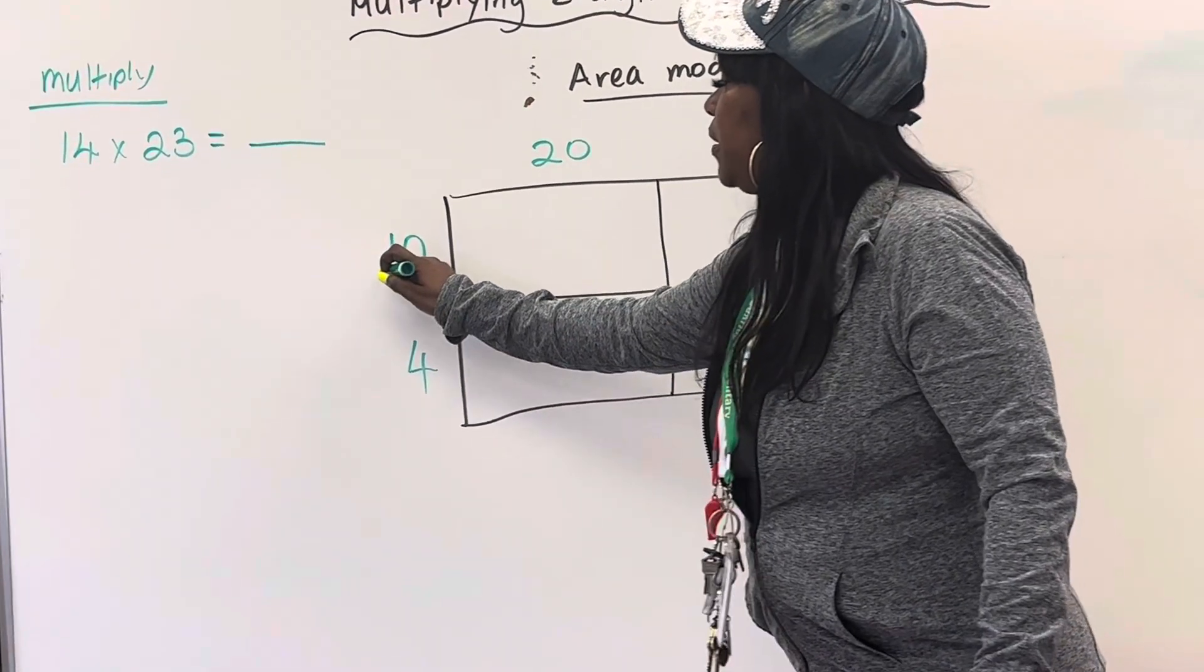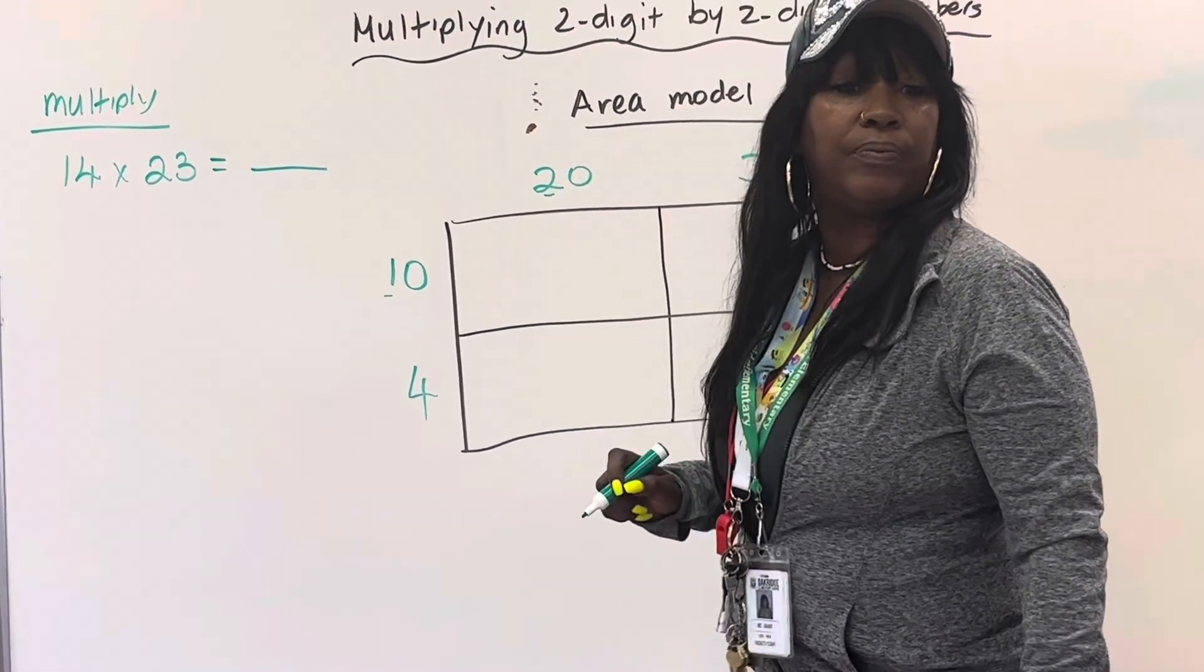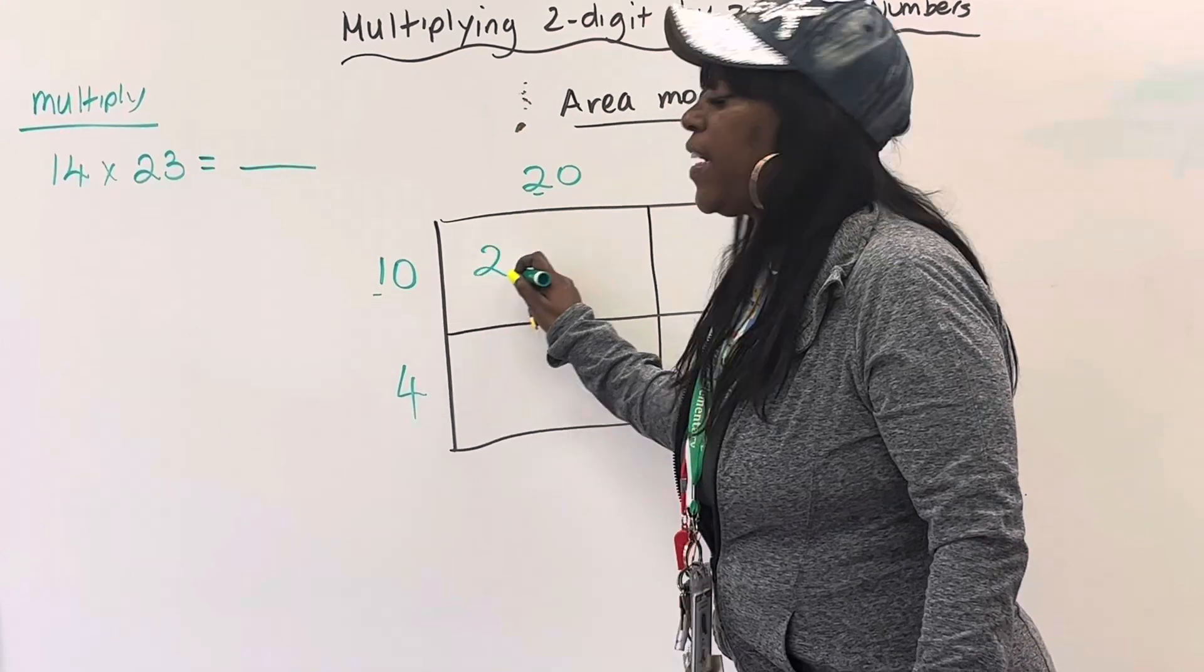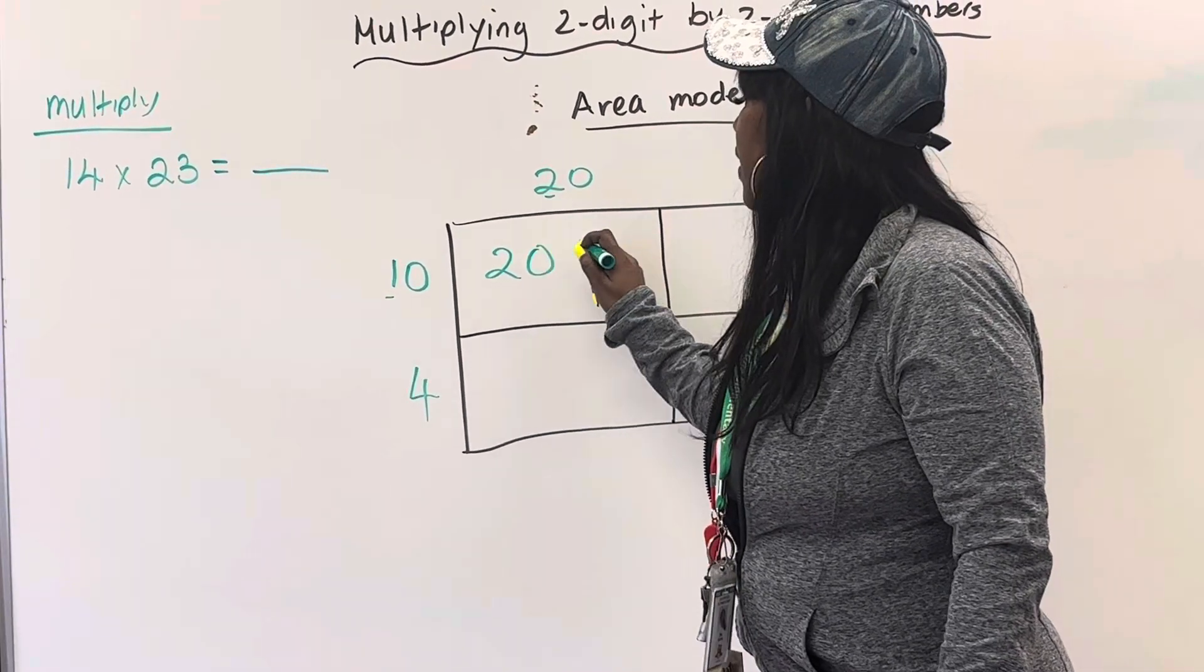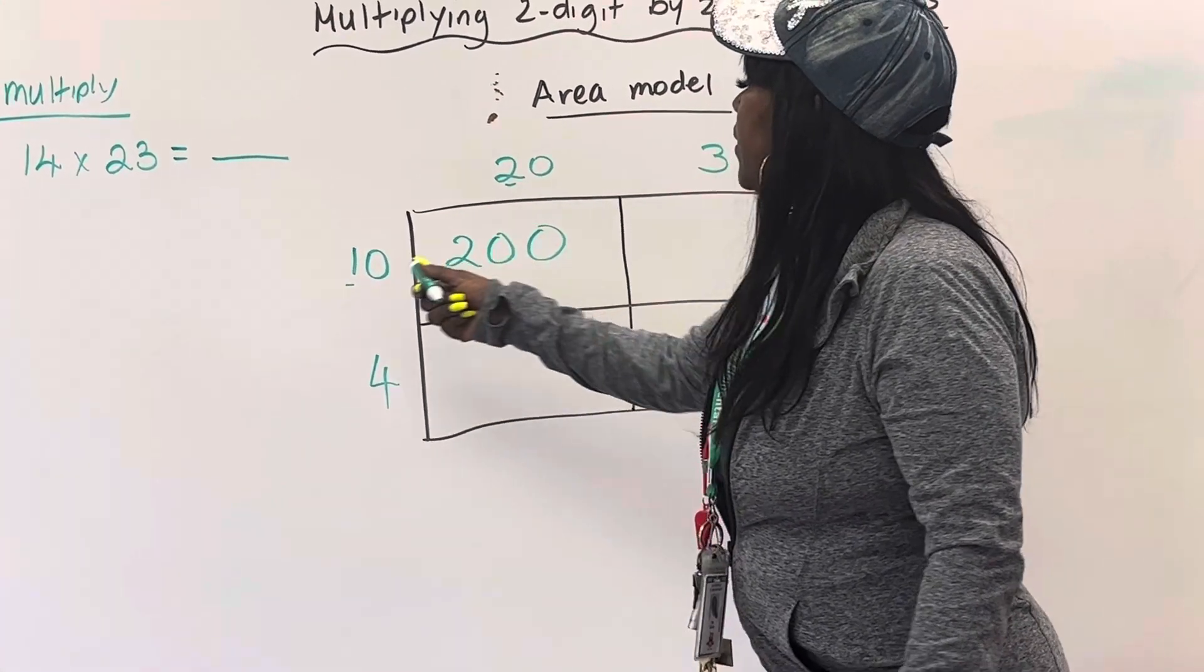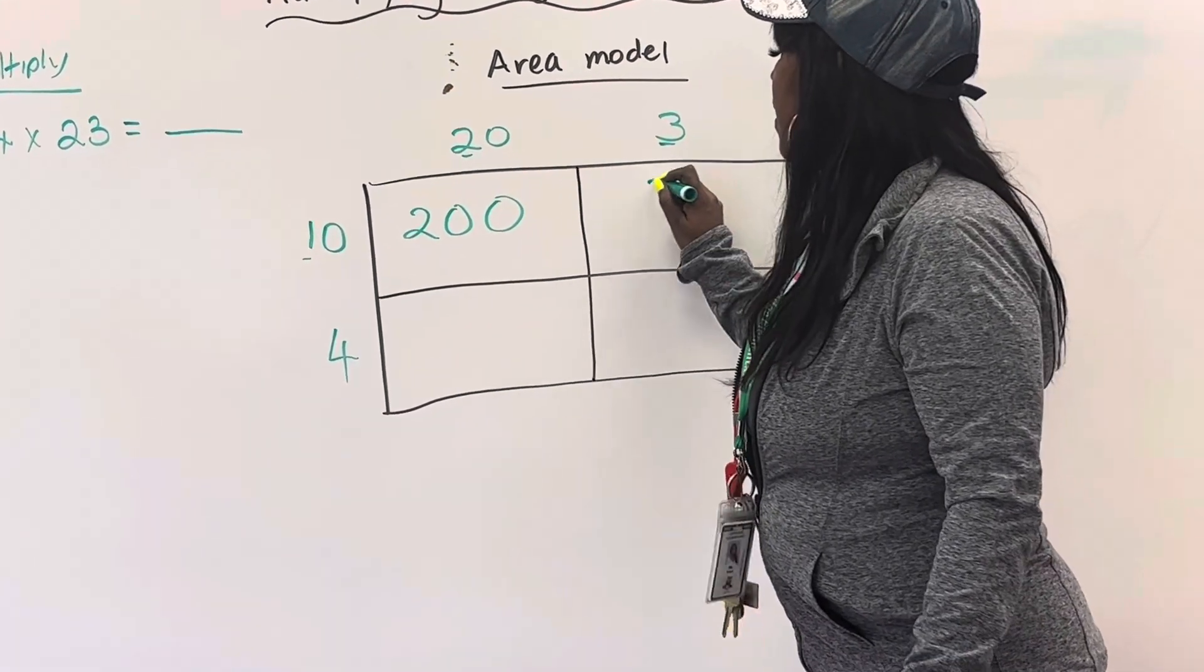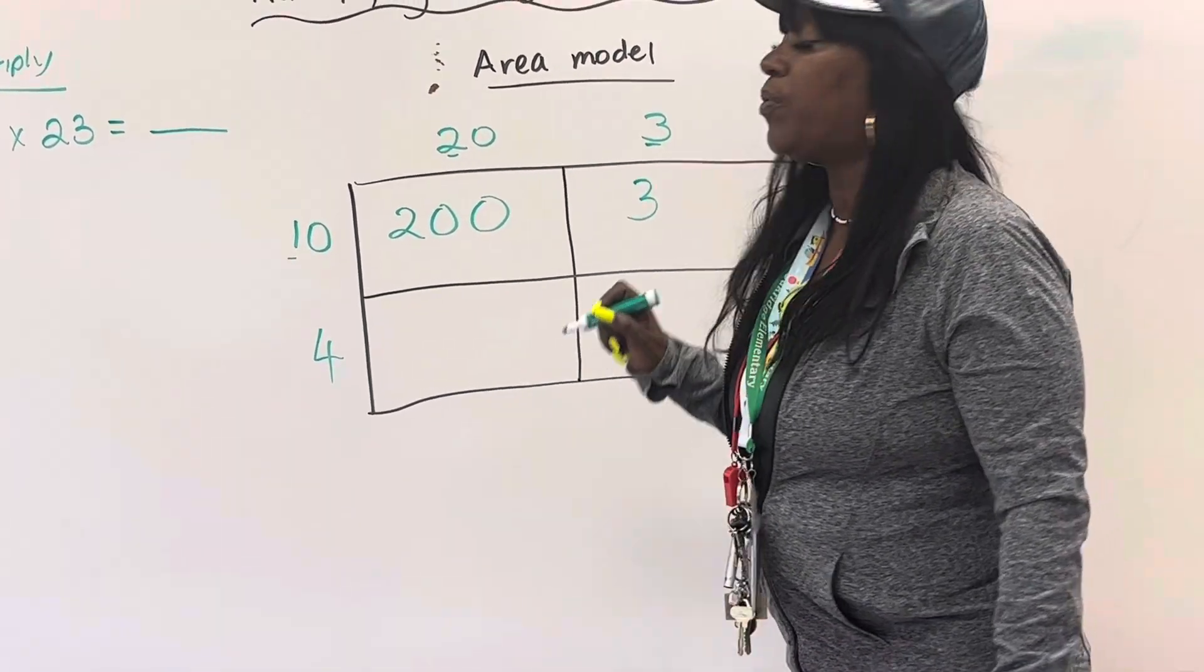What is 1 times 2? 2. Don't forget the zeros. What is 1 times 3? 3. How many zeros are left over? 1.